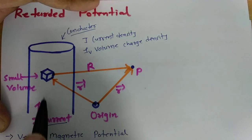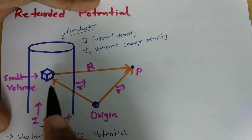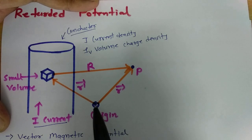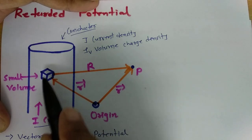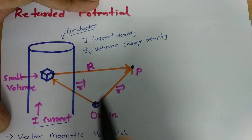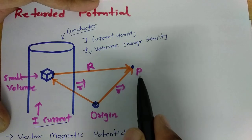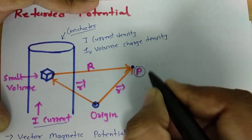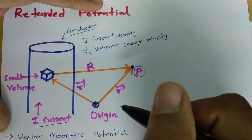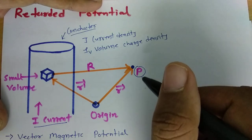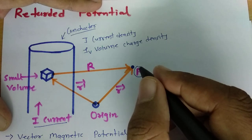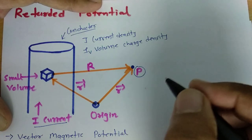As current i is passing through this conductor, we are considering a small differential volume for observation. Here there is an origin. The source quantity is represented by vector r-dash with respect to the origin, and observation is being done at point A. So point A is the observation point where we want to find the potential. Basically there are two different types of potential at this observation point — one because of the magnetic field and one because of the electric field.